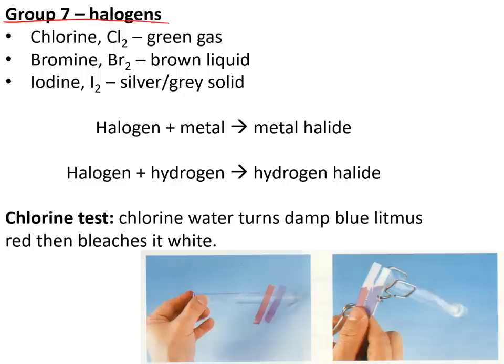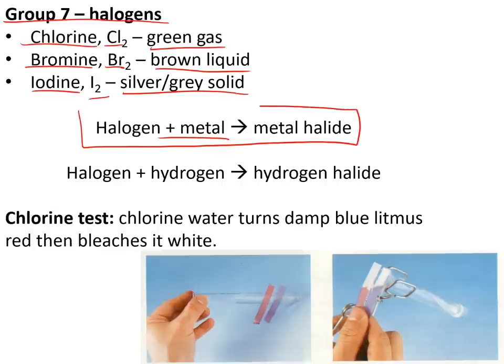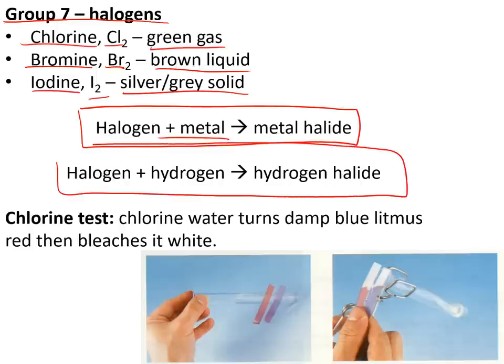Group 7 is the halogens: chlorine (Cl2) is a green gas, bromine (Br2) is a brown liquid, and iodine (I2) is a silvery grey solid. They react with metals to make a metal halide — for example, chlorine and sodium makes sodium chloride. Halogens react with hydrogen to make a hydrogen halide — for example, bromine and hydrogen makes hydrogen bromide. The test for chlorine is that it turns damp blue litmus paper red and then bleaches it white.